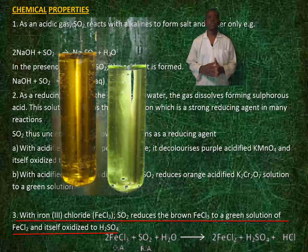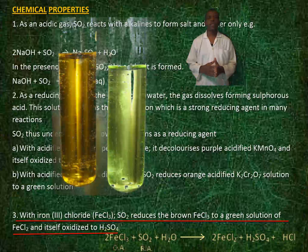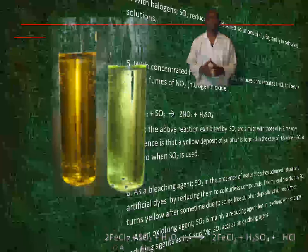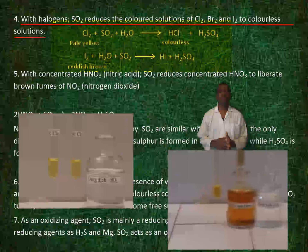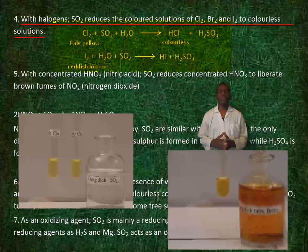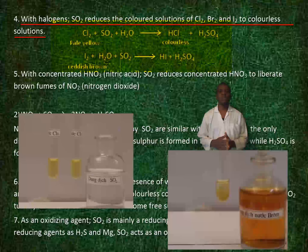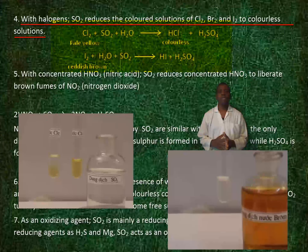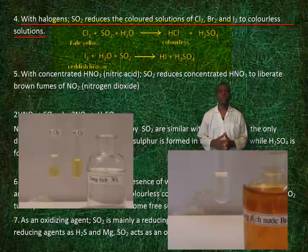With iron(III) chloride, sulfur dioxide reduces the brown iron(III) chloride to a green solution of iron(II) chloride and itself oxidizes to sulfuric acid. With halogens, sulfur dioxide reduces colored solutions of chlorine, bromine, and iodine to colorless solutions.